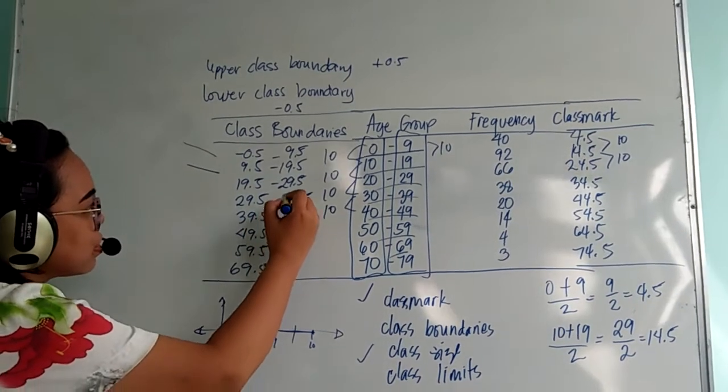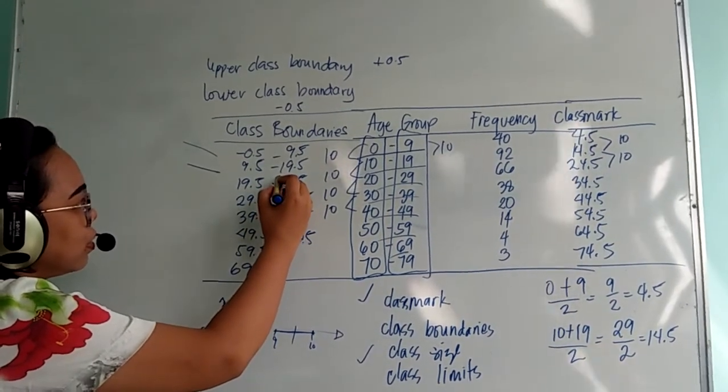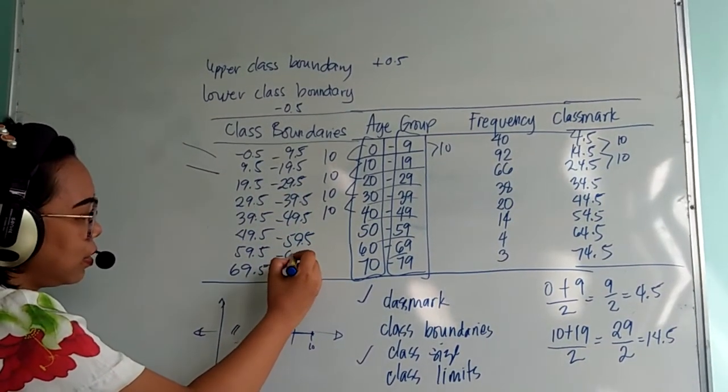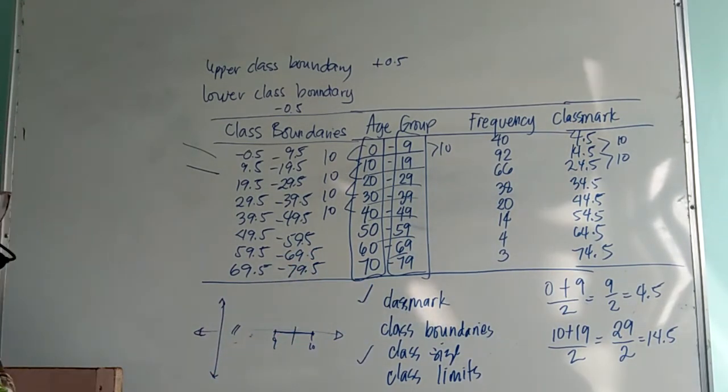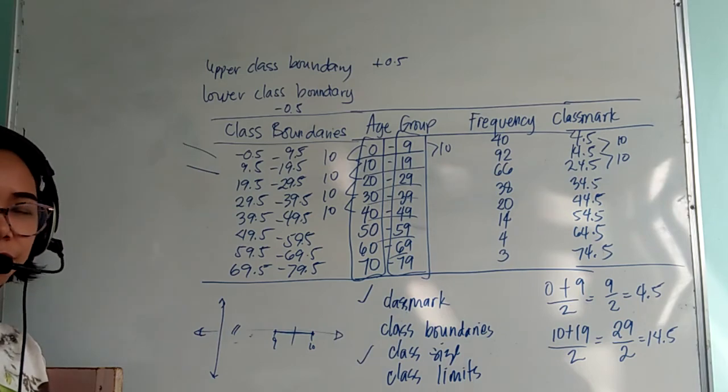This is 69.5 and 79.5. So that's the concept of class boundaries.